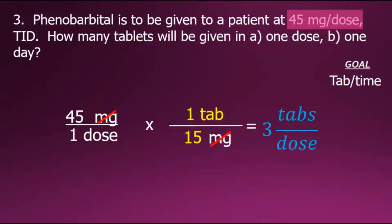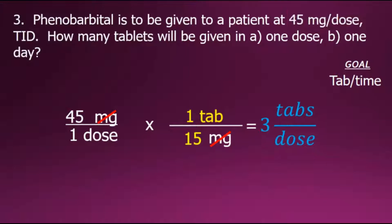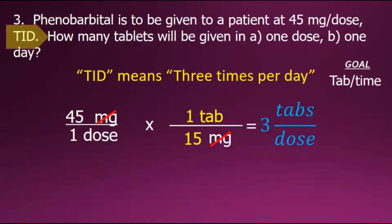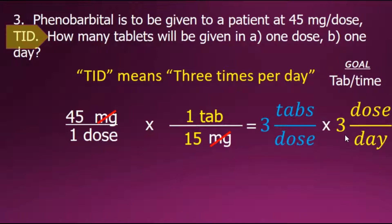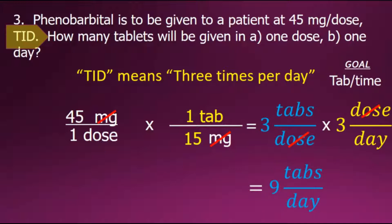The second question asks how many tablets should be given in one day. The order included TID, which is an abbreviation for a Latin term meaning three times per day. We use that to create an additional conversion fraction of three doses per day, cancel out the common factor of dose, and performing the multiplication gives us three times three, or nine tablets per day.